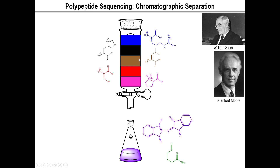Using an HPLC machine, you also have the benefit of seeing at what time an amino acid comes out of the column. By knowing the time of elution, you can correlate that to the specific identity of the amino acid. So this is actually a pretty genius technique, all things considered.